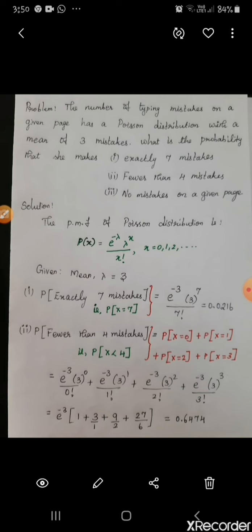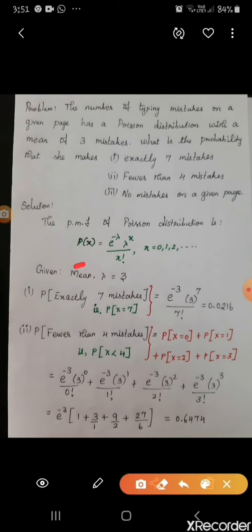Solution: we know the probability mass function of a Poisson distribution — P(x) = e^(−λ) · λ^x / x!, where x takes values 0, 1, 2, ... to infinity. In the question, the mean is given as 3 mistakes. For a Poisson distribution the mean equals λ, so we take λ = 3.